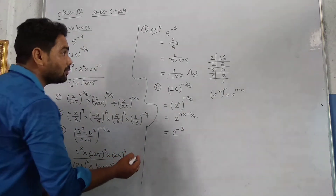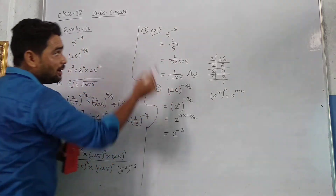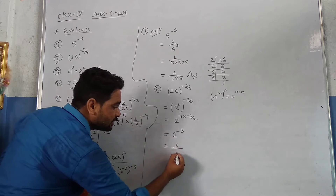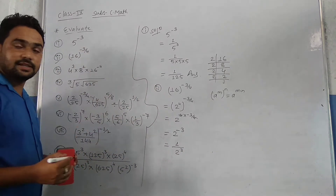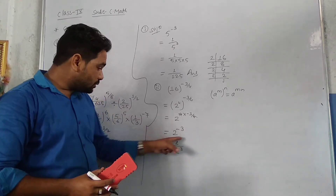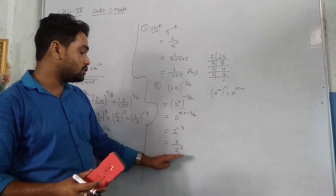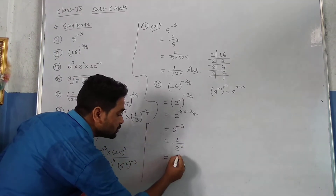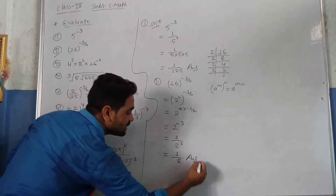Now 2 power minus 3 — in the same way, to make the power positive, it goes to the denominator. We get 1 upon 2 cube. So 1 upon 2 power 3, and that is our answer.